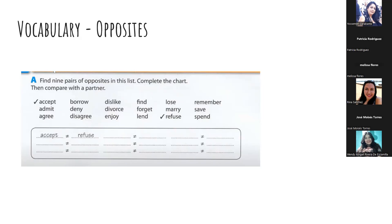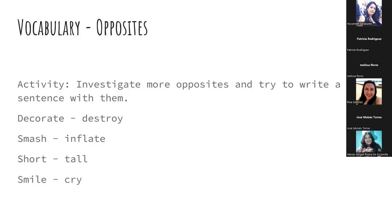I see that you have increased your vocabulary. That is another way to learn vocabulary — if you know how to say something, try to find the opposite. Accept — refuse. Marry — divorce. Enjoy — dislike. Try to investigate more opposites and write a sentence with them. If possible, bring more opposites for tomorrow — that is the last class.